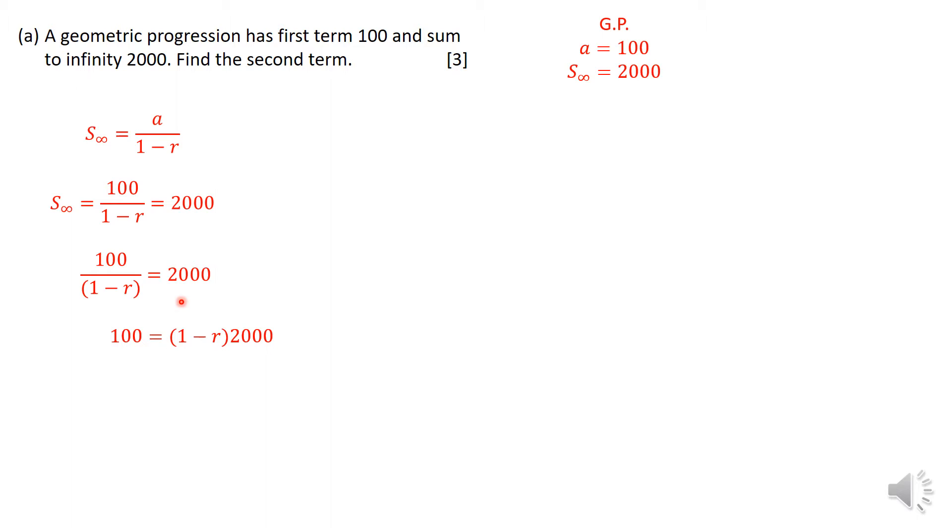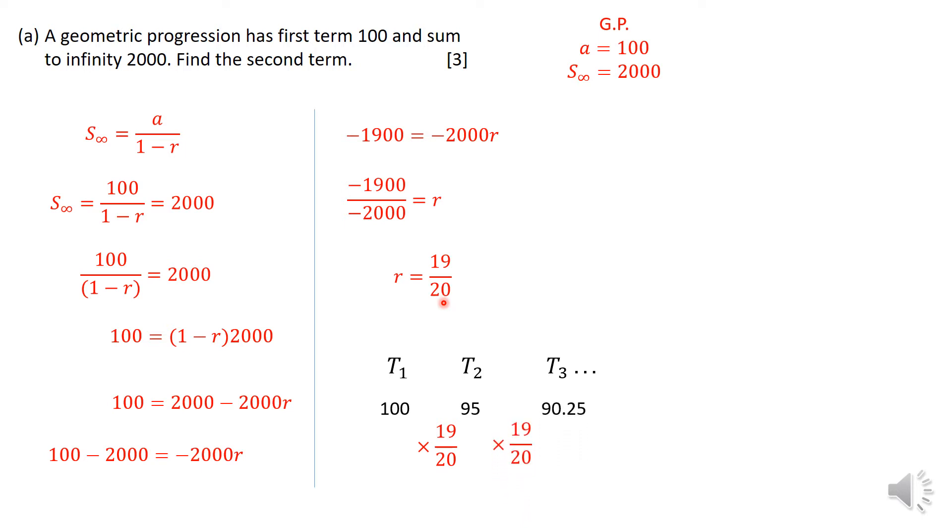The objective here is you have got the 100 for the first term, so the R is actually what we are supposed to calculate first. It becomes a simple equation where you solve for R. You should get that R is 19 upon 20. Look at the steps clearly. The second term is 100 times 19/20, which gives you 95. The third term will give you 90.25 and so on, so the required answer is 95.